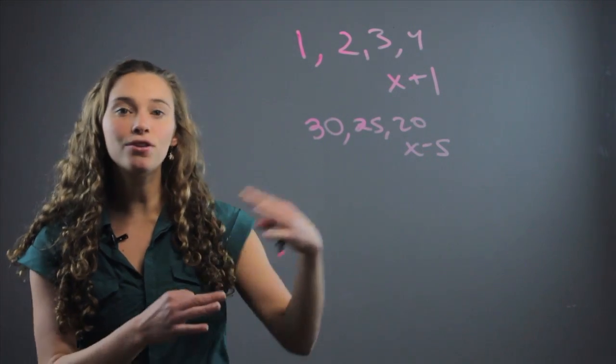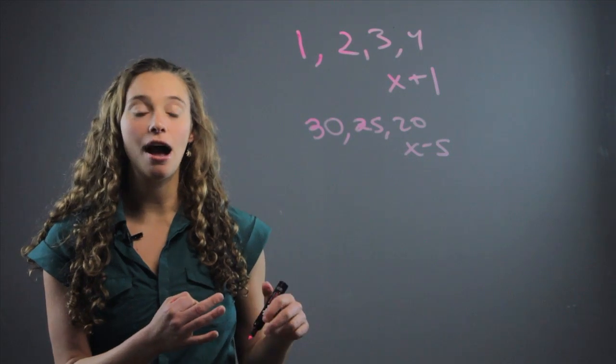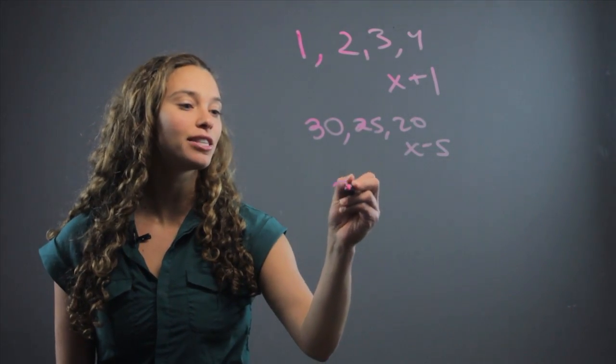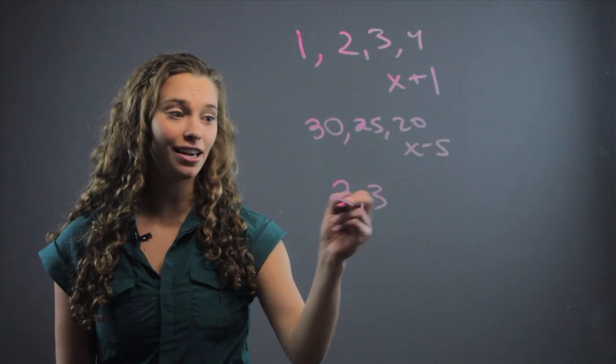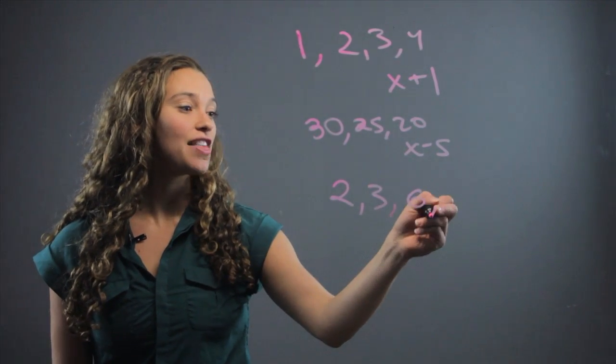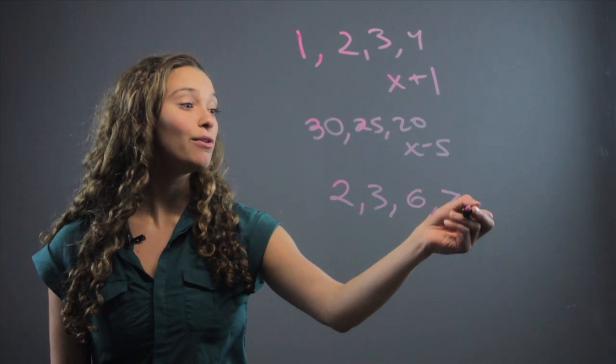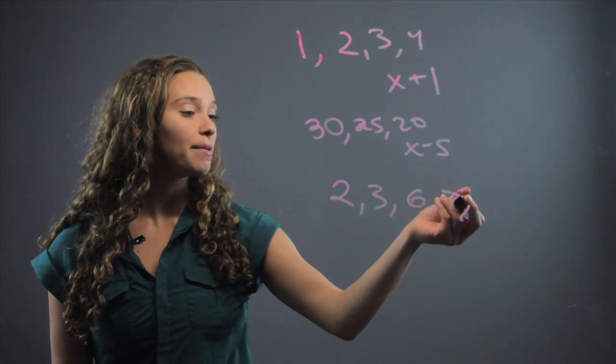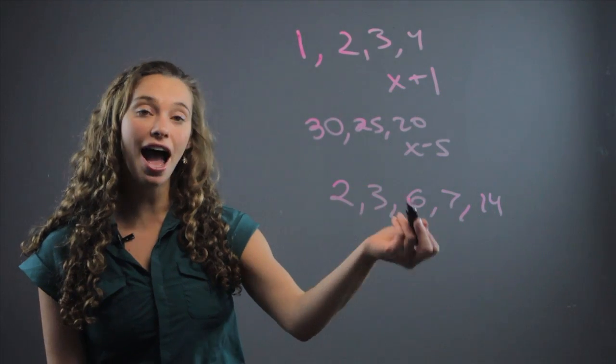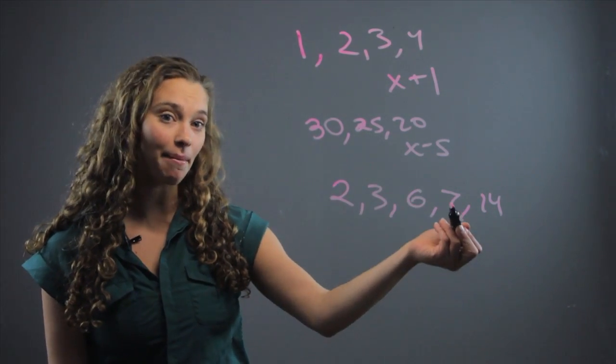Perhaps you're multiplying and then adding. Maybe the pattern skips each time. So maybe you start with 2 and you go to 3, you've added 1. But then you multiply and go to 6. And then you add 1 and go to 7, and you multiply and double it again to go to 14. So here the pattern is that you add 1 and then you double the number.